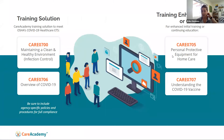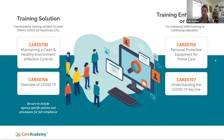Our training solution includes two classes we recommend to meet the more general training topics: CARE 0700, Maintaining a Clean and Healthy Environment for Infection Control, and CARE 0706, Overview of COVID-19. This covers pretty much all of the general training topics outlined in the ETS. We also have enriching additional classes for continuing education or to enhance initial training: CARE 0705, Personal Protective Equipment for Home Care, and CARE 0707, Understanding the COVID-19 Vaccine — which introduces the vaccine idea without pressing you one way or the other, helping people make an educated decision.